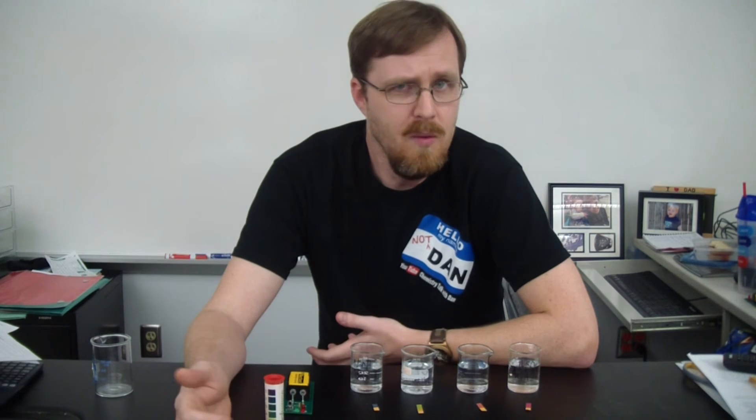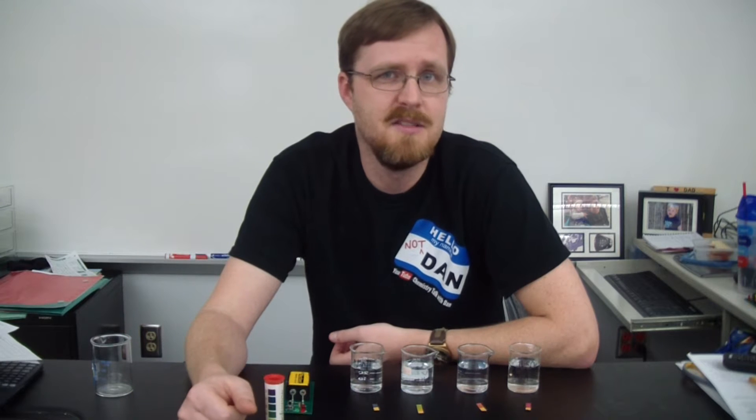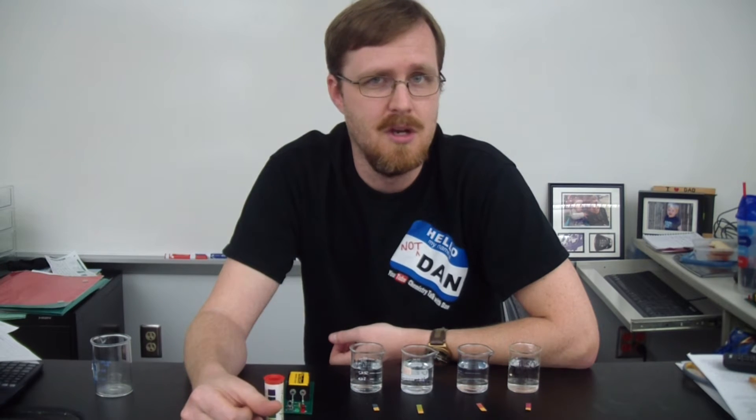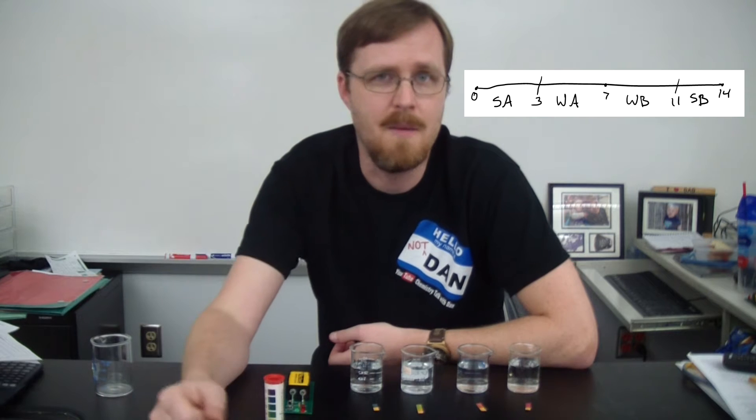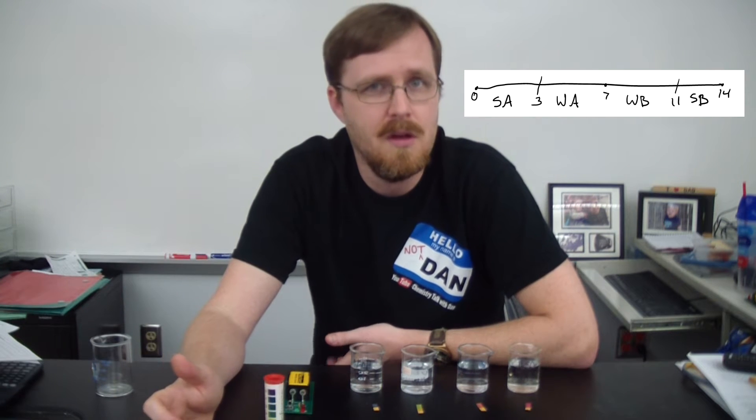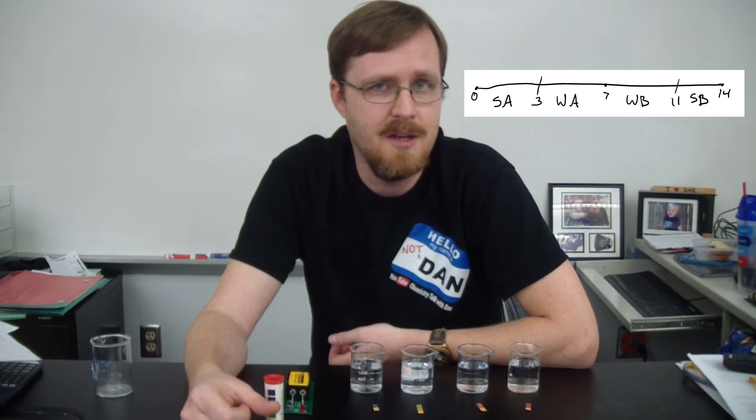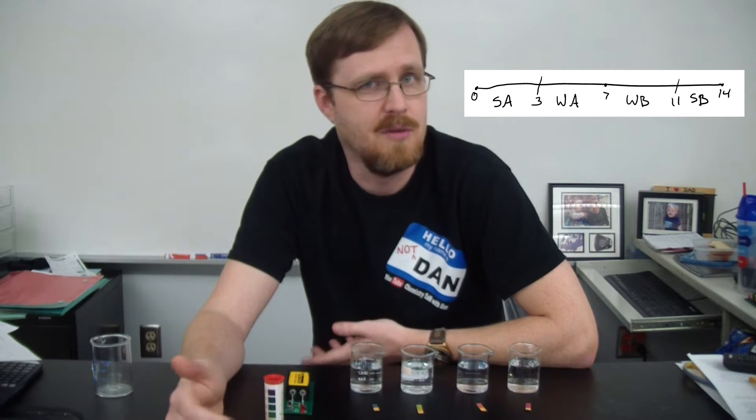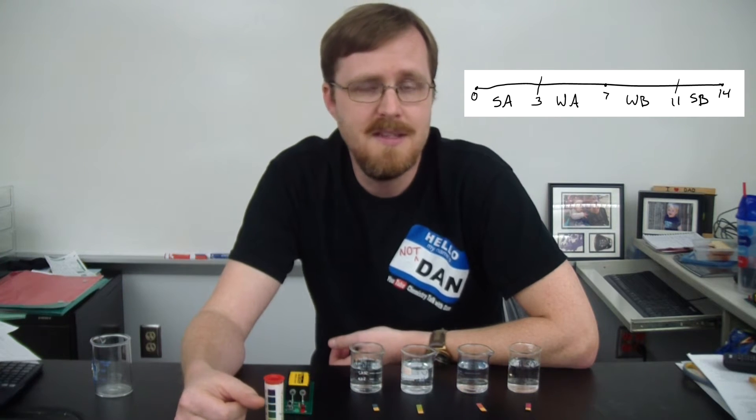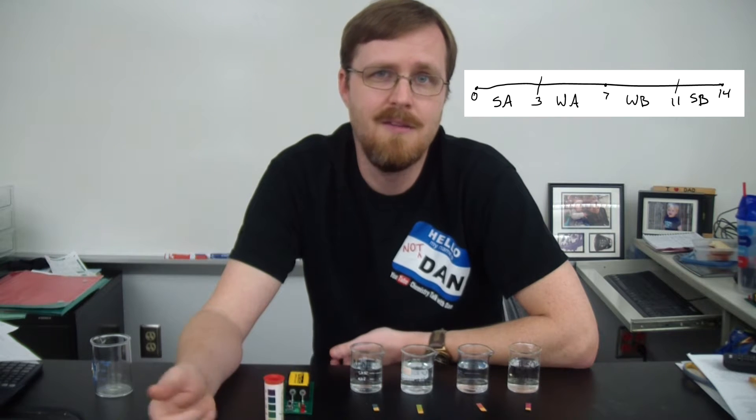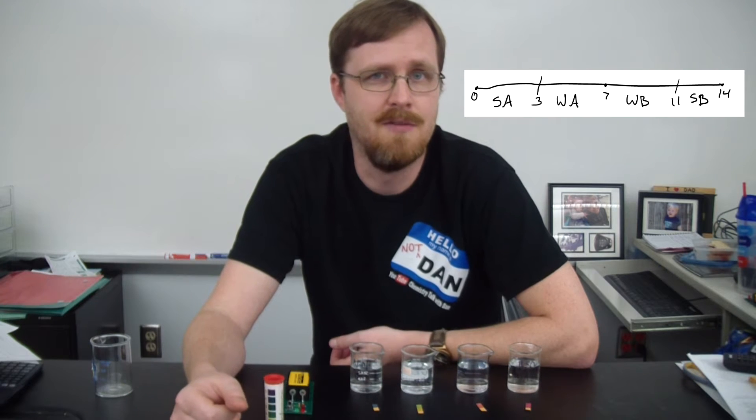Well, one way to figure that out is by testing its pH. So if you take a look at this pH scale right here, as a general rule, the strong acids are found at the 0-3 range, weak acids are 3-7, weak bases are 7-11, and finally the strong bases are 11-14.